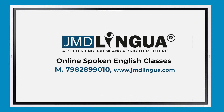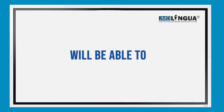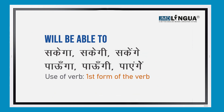Hello guys, today we have a grammatical section. The title of the section is 'will be able to'. It means sakhega, sakhegi, sakhege, paunga, paengi, paengi. We use 'will be able to' with the first form of the verb. We have some examples.